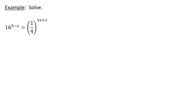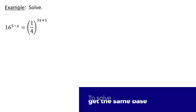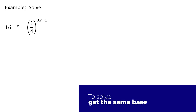In this problem we're asked to solve 16 to the power 5 minus x equals one-fourth to the power 3x plus 1. So if we're going to use the equivalence property, and that's what we have to do here, we must get the same base.